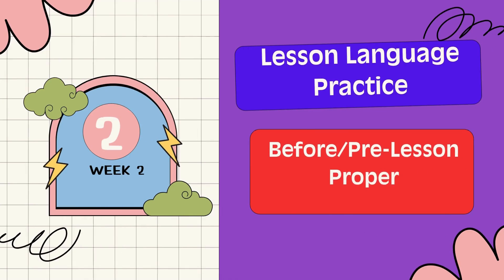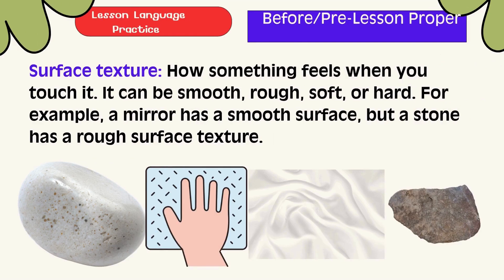Lesson Language Practice. Surface Texture — how something feels when you touch it. It can be smooth, rough, soft, or hard. For example, a mirror has a smooth texture, but a stone has a rough surface texture.